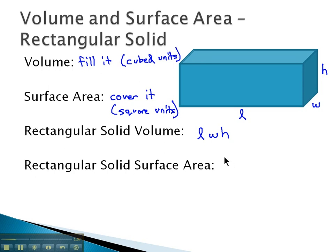The way we calculate the surface area, or how much it takes to cover it, we take two times parentheses, the length times the width, plus the length times the height, plus the height times the width.